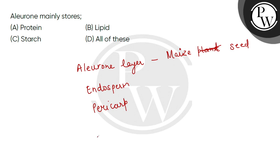Now, if we look at the options — what does the Aleurone layer store? The Aleurone layer mostly stores protein. Not lipids, not starch, not all of these. So the Aleurone layer stores protein.